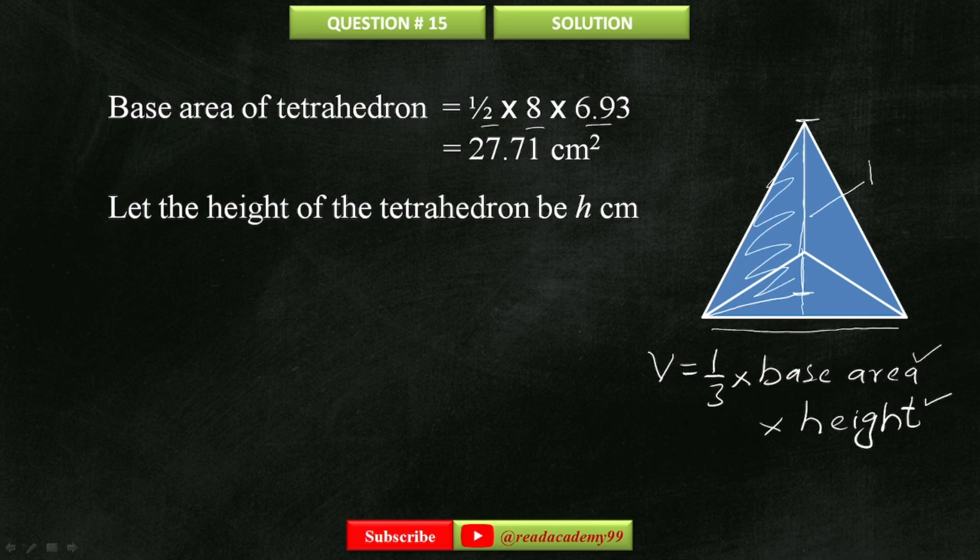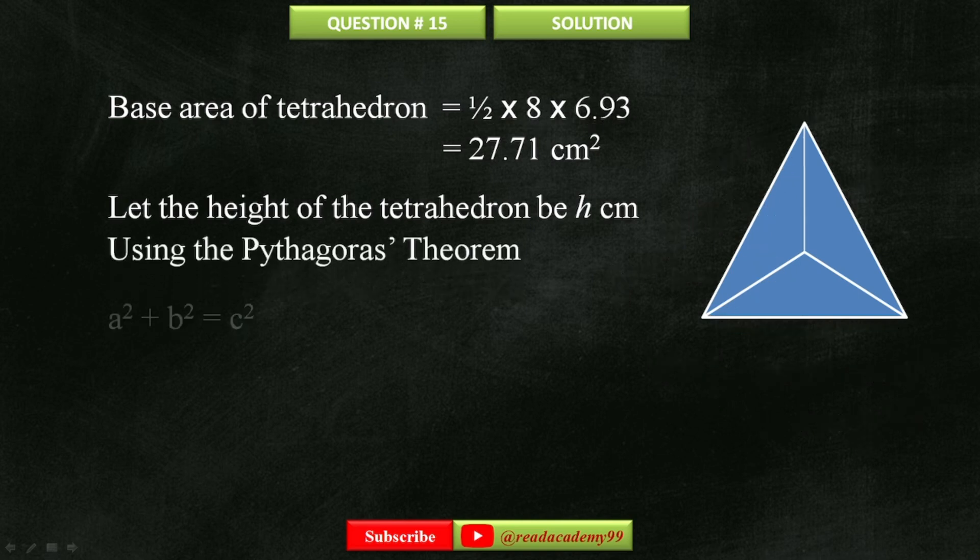Now to find the height of this triangle, I'm going to use the Pythagoras theorem again. As we know that this side is equal to 8 centimeters. And we also know from the question that the distance from the center of the triangle to its vertex is 2 third times its height, which is 6.93 centimeters. Using these values, I'm going to find H using the Pythagoras theorem. A squared plus B squared equals to C squared.